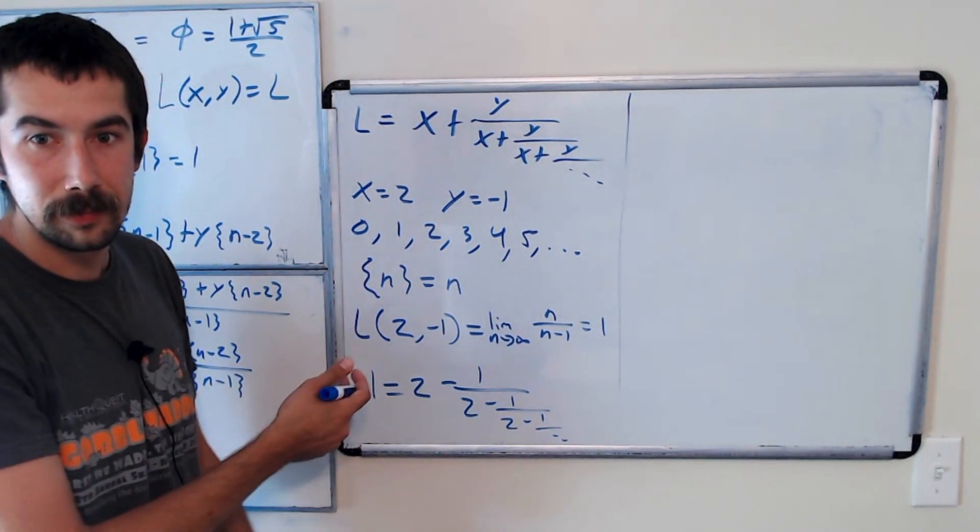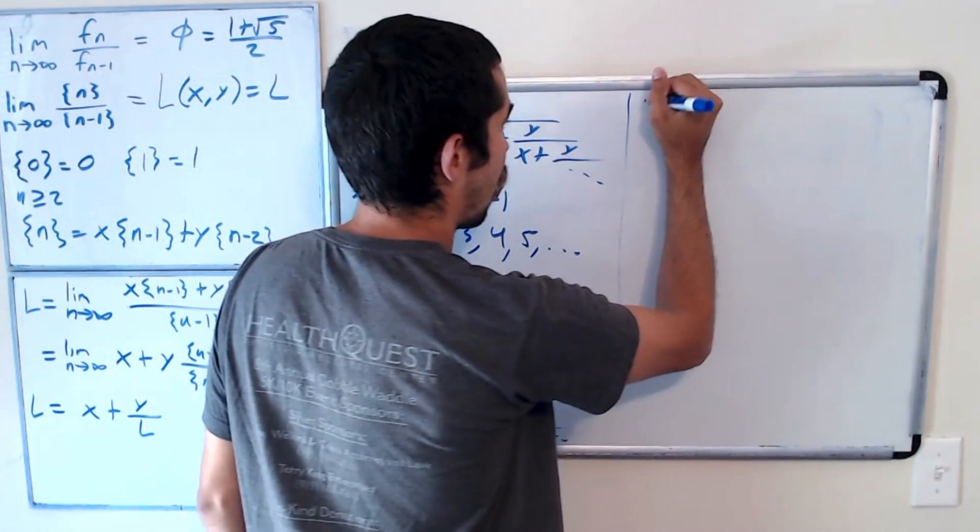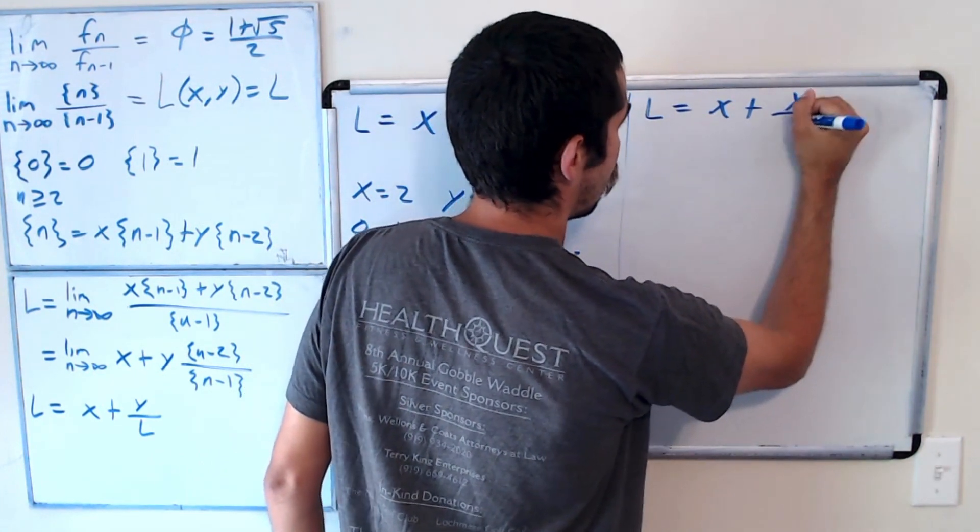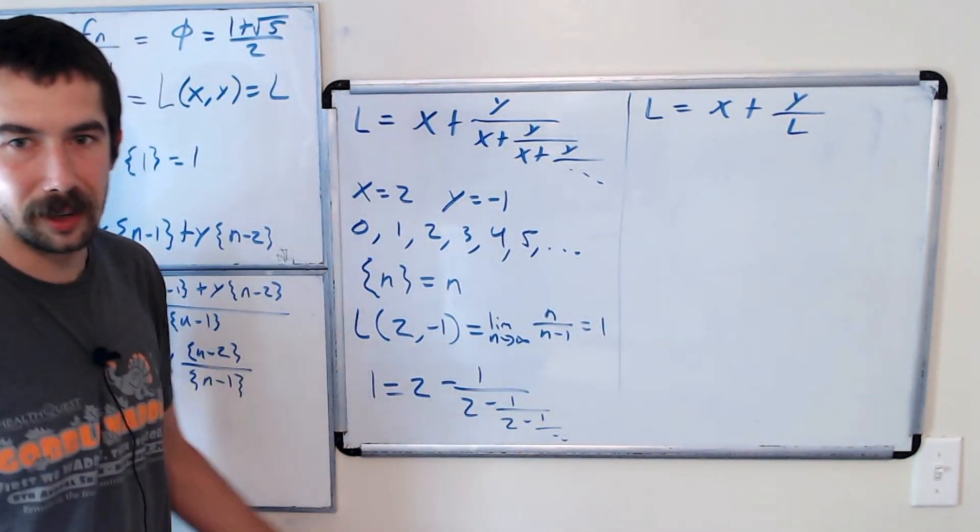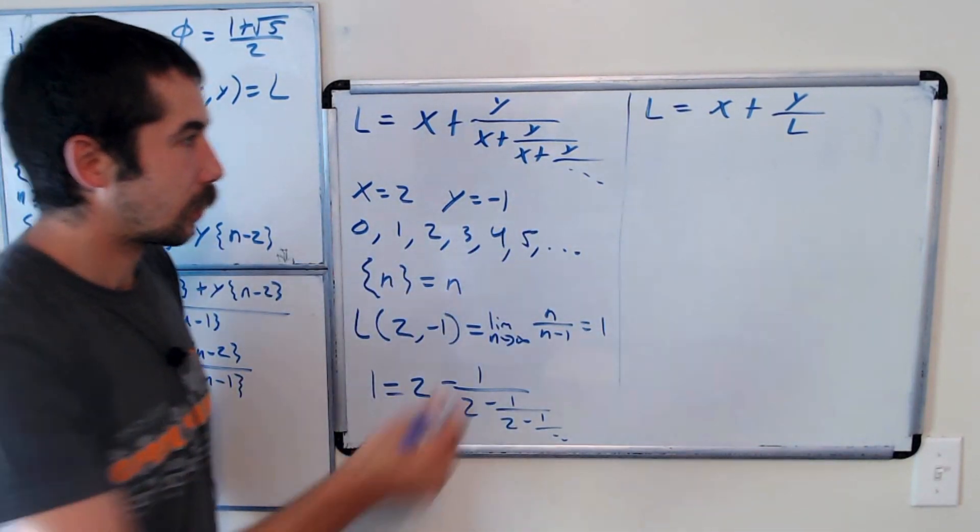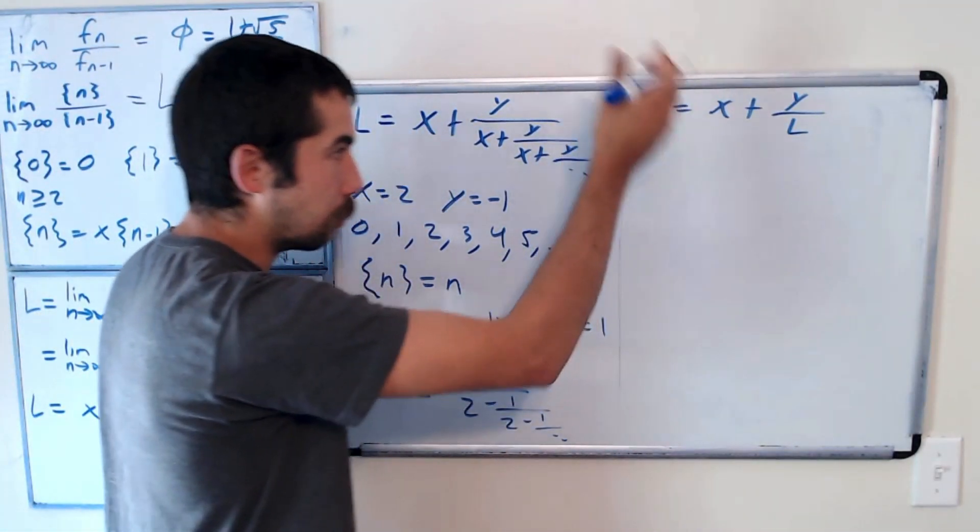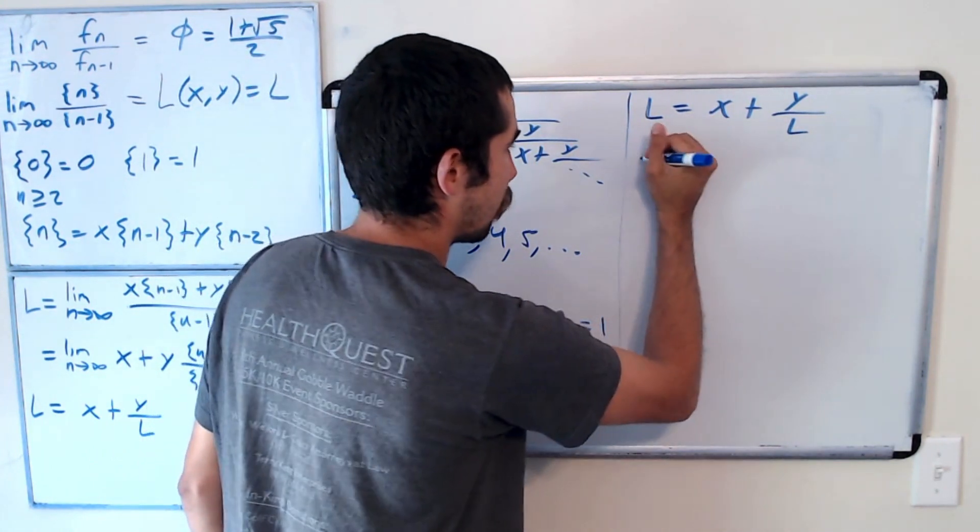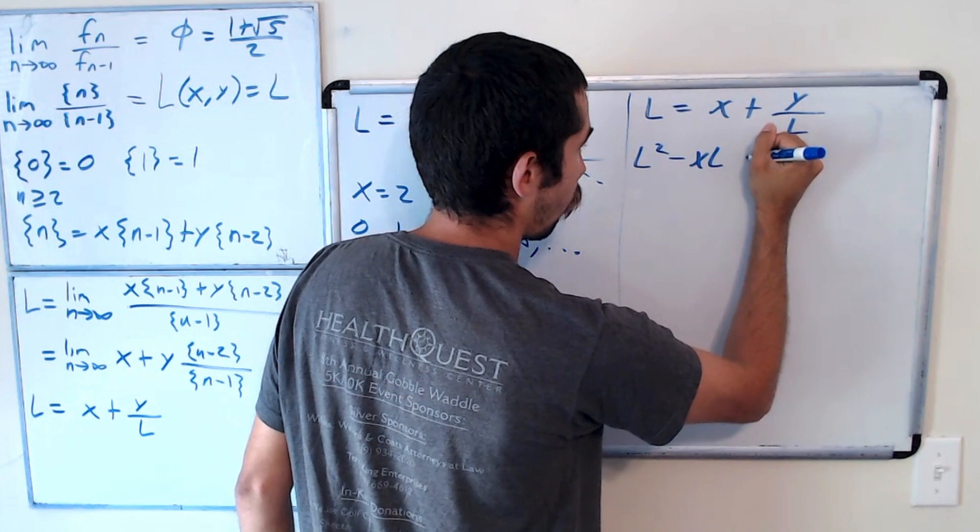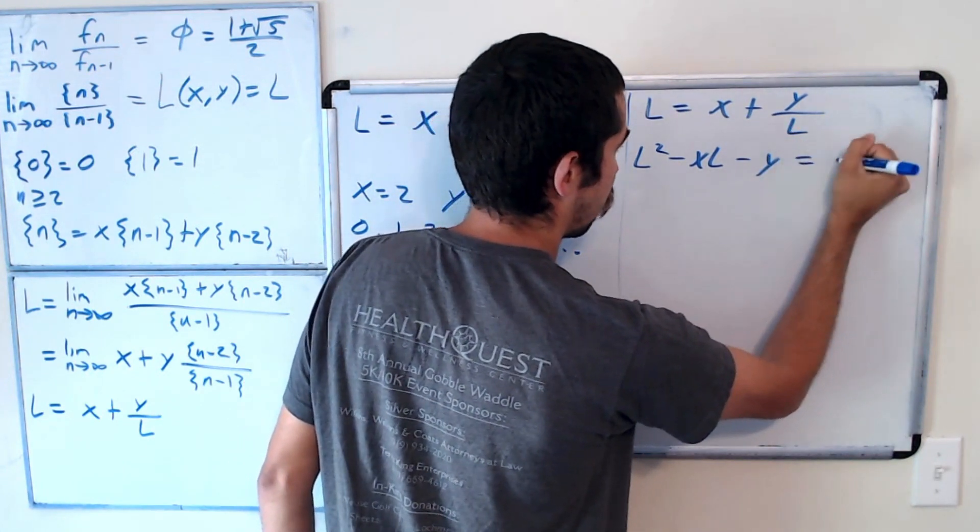But let's look at this formula again. So L is equal to x plus y over L. And let's solve for L so we don't have to have it as a continuous fraction. Let's just solve for L. Let's multiply both sides by L and bring everything to one side. So L squared minus xL minus y is equal to 0.